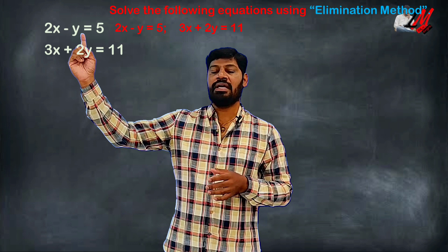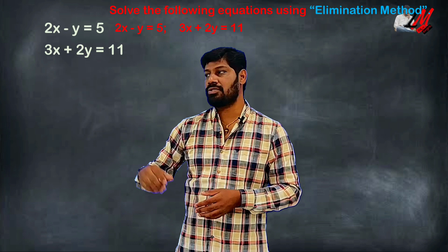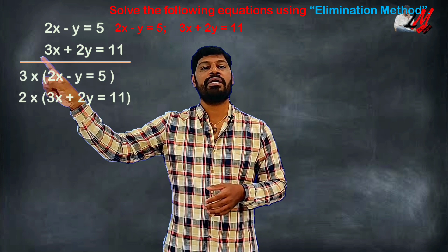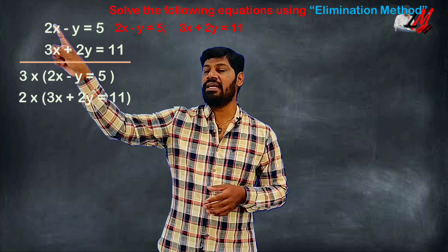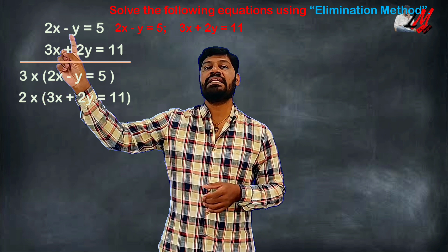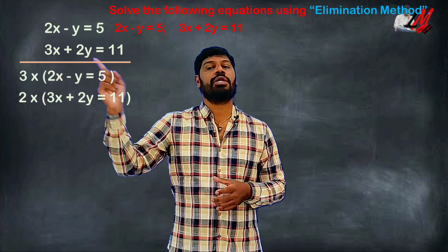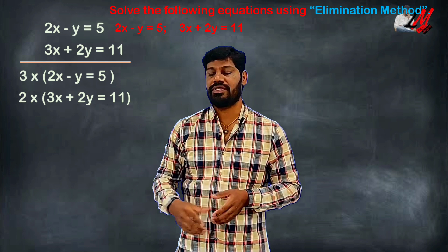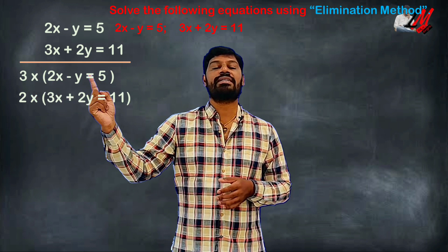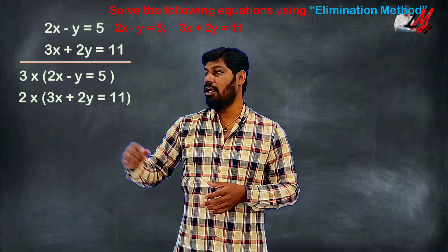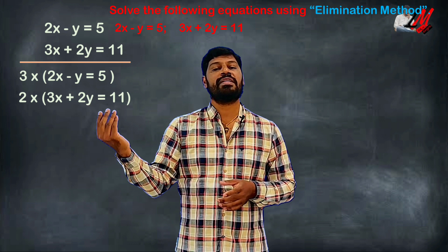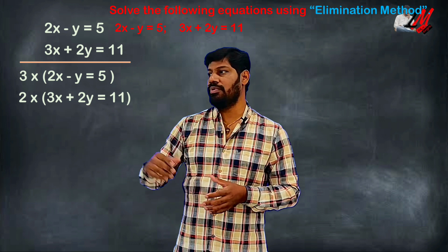If you multiply, the x coefficient in the second equation becomes 2. Because 2 is from the first equation and 3 is from the second equation. So: 3 times (2x minus y equals 5), and 2 times (3x plus 2y equals 11). We multiply and then subtract to eliminate x.